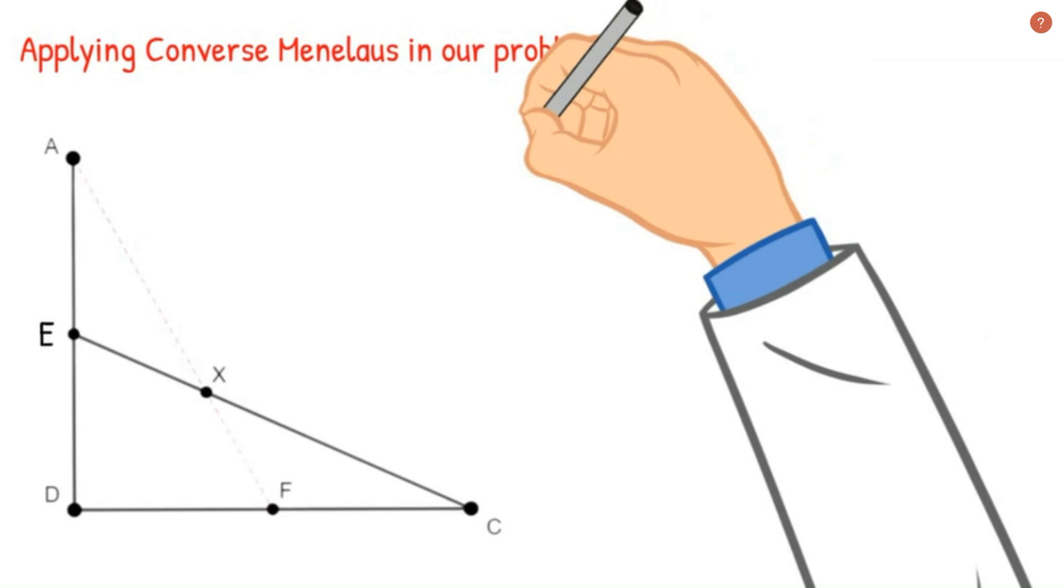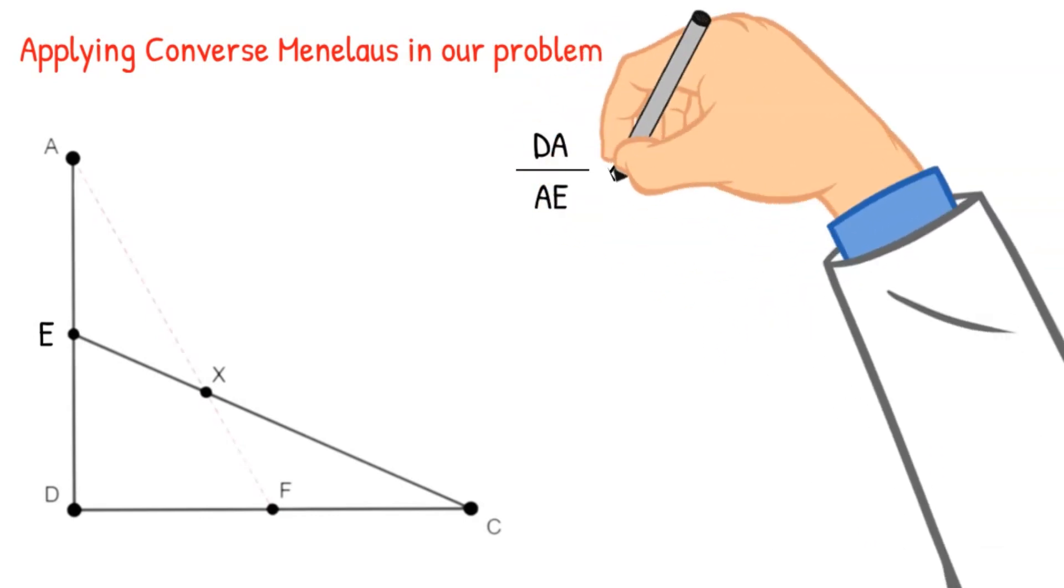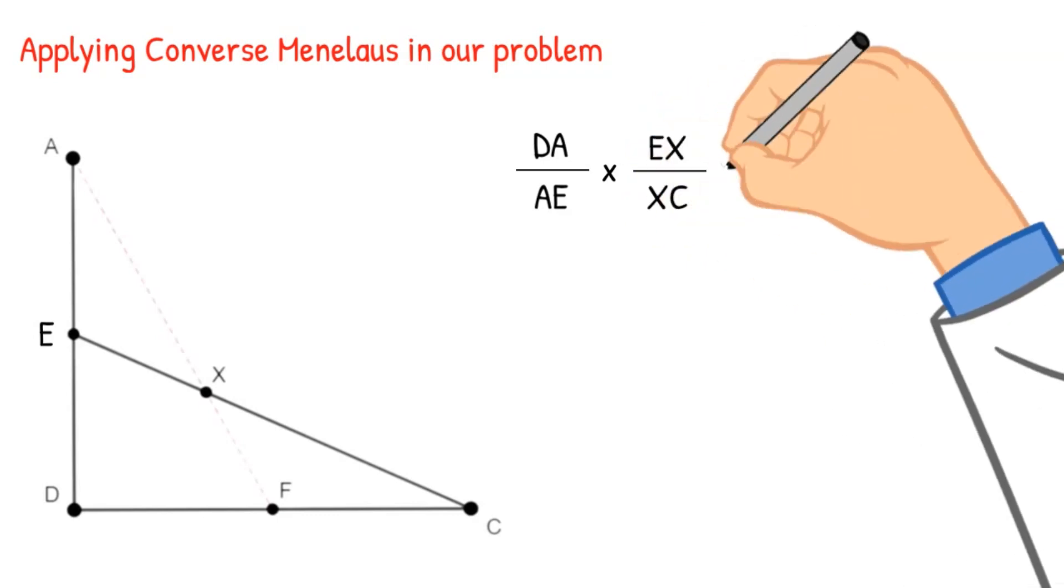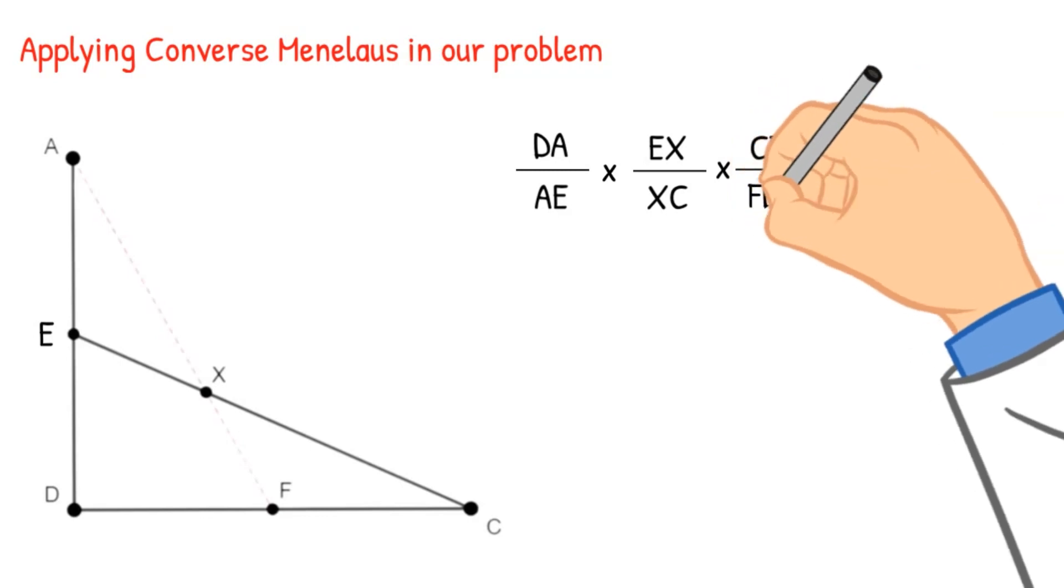Now if we can prove that DA by AE times EX by XC times CF by FD is equal to 1, then we can say AX and F will be collinear points.